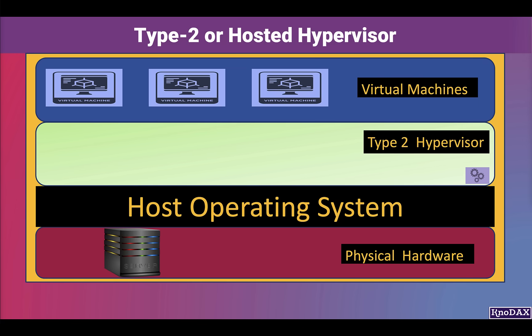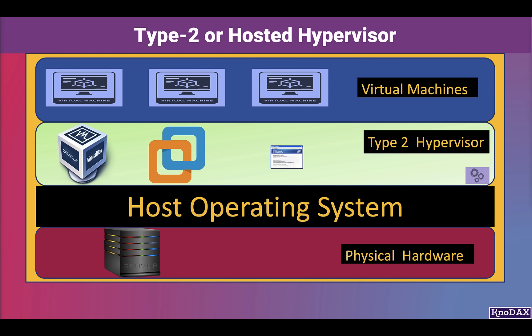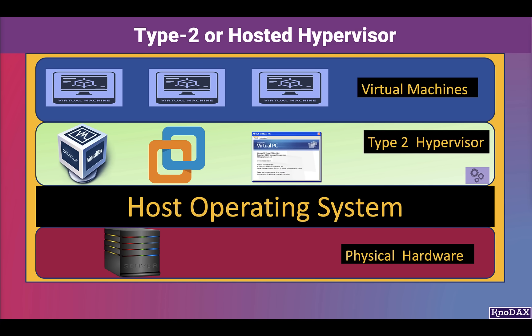Type 2 or hosted hypervisor runs on the host operating system. As you can see in the diagram, at the bottom layer we have the physical hardware, then the OS is installed, and since this is the type 2 hypervisor diagram, a hypervisor is installed on the OS, then we have virtual machines. Examples of type 2 hypervisors are Oracle VirtualBox, VMware Workstation, and Microsoft Virtual PC. The main difference between type 1 and type 2 is that type 1 hypervisor is installed on bare metal, while type 2 hypervisor is installed on the operating system.